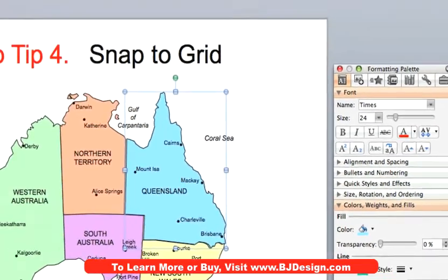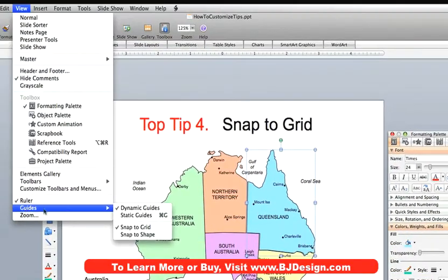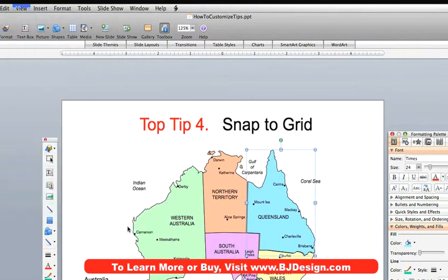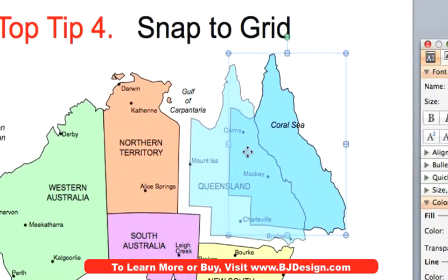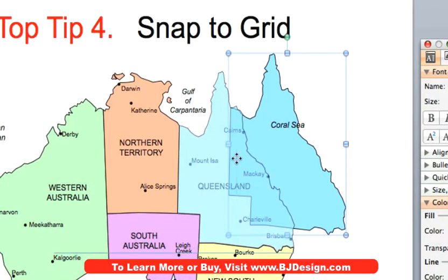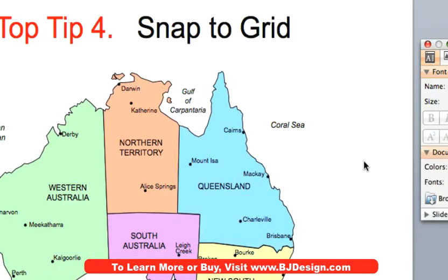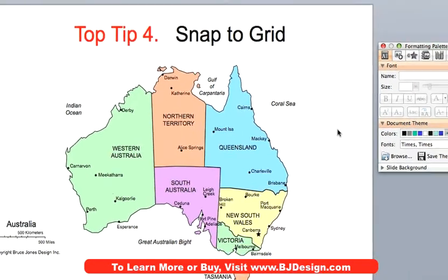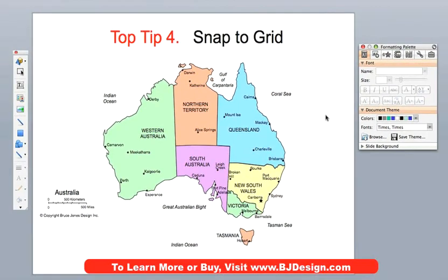So if I go and turn the grid off — here we go, Snap to Grid off — now I can bring this out, and now it doesn't need the grid, and I can just bring it right in exactly where it should be. A great tip to know: if you take one of our maps and copy it into a new presentation and you can't seem to get the parts to go back together again, it's the Snap to Grid.